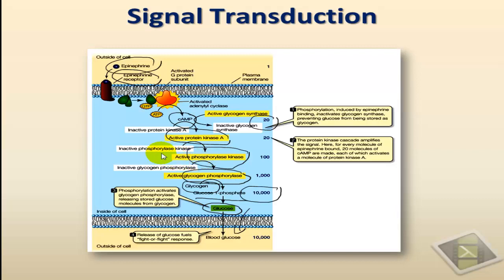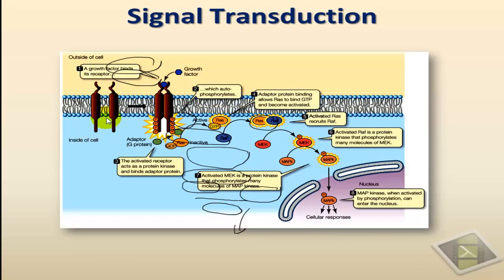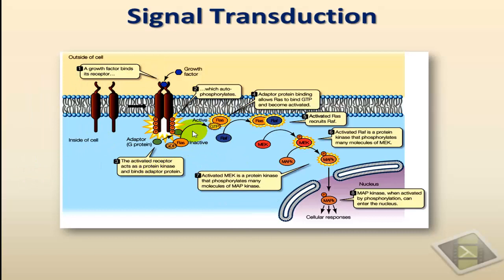Signal transduction happens inside the cell and involves membrane receptors. The two types of membrane receptors that work through signal transduction pathways are G-protein coupled receptors, like epinephrine in that case, as well as protein kinase receptors that act through a cascade of phosphorylation. In that protein kinase receptor, the signal transduction pathway involves the autophosphorylation of the receptor itself, which leads to the phosphorylation of different kinds of proteins.